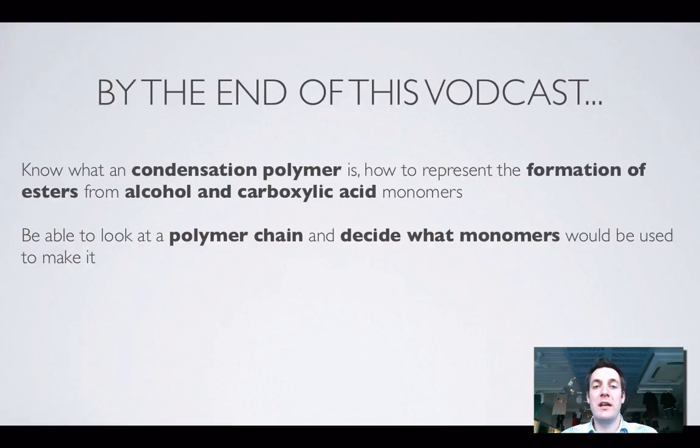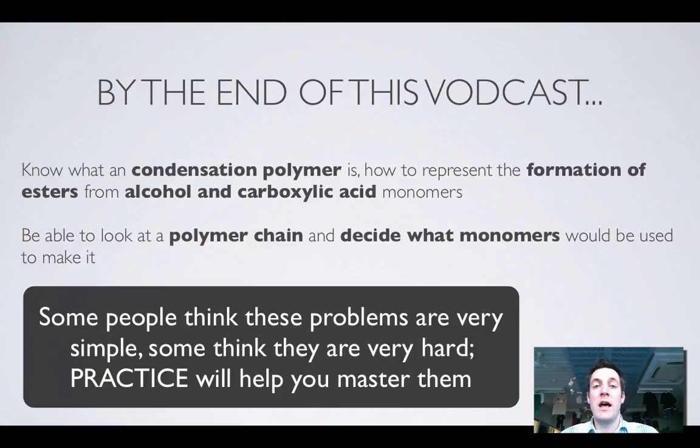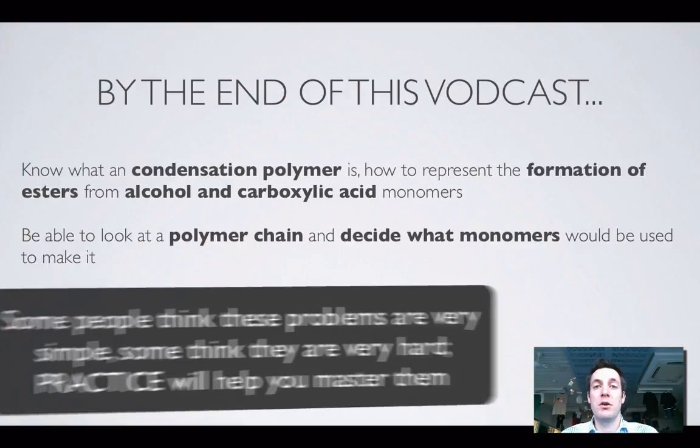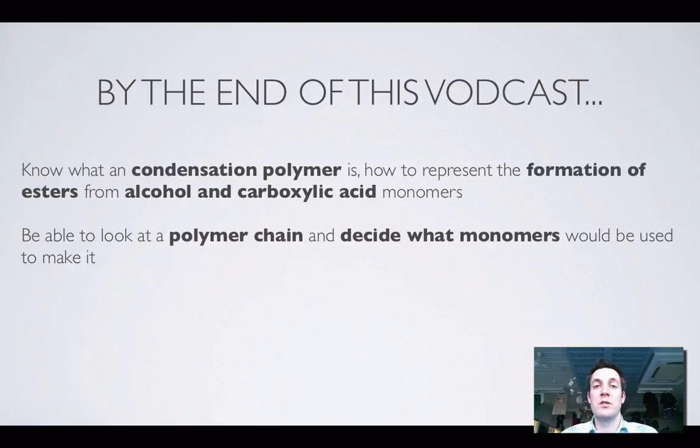Well that's about the end of that and what we were hoping we would understand by the end of this film. Hopefully you do is what a condensation polymer is and how we can show a condensation polymer forming from an alcohol and a carboxylic acid monomer. So in other words drawing the polymer chain that forms from two monomers and then reversing the problem and drawing the monomers that would have joined together to make the polymer chain. So it's all about like it was with the addition polymers identifying what the repeating units are and drawing them clearly. Any questions, any confusion please feel free to come and ask me or to post a comment on YouTube.